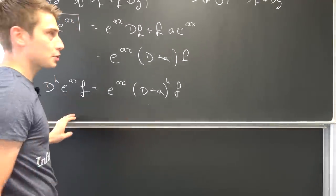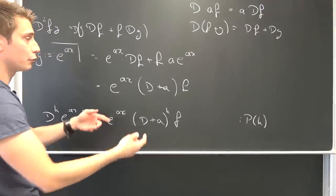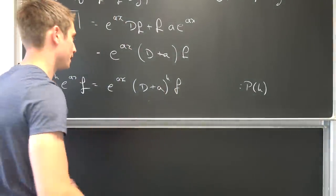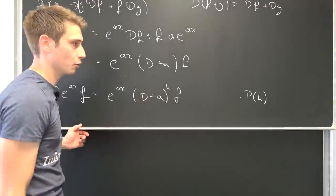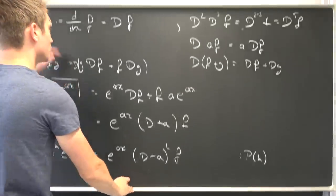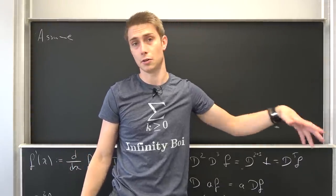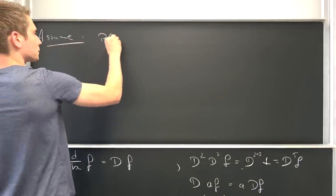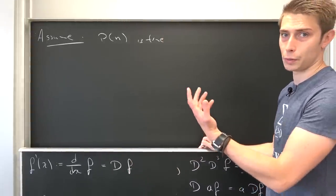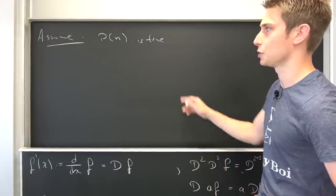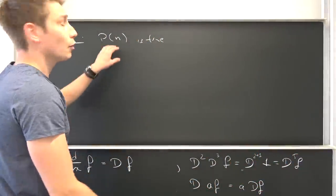Let us prove this. For the first iteration — if this right here is our proposition P(k) — we have already proven the first iteration. So P(1), that's the induction base, is nothing but D(e^(ax) f), which results in (D + a)^1 times f — this already holds. Now we are going to assume that P(n) is true. If you don't know anything about the principle of mathematical induction, I made a video on that already. We are going to assume P(n) is true, and now we want to show that P(n+1) is true under the condition that P(n) holds.